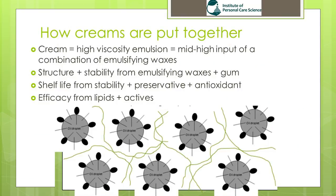To create a cream you need to create a high viscosity emulsion, which we do by using mid to high inputs of a combination of emulsifying waxes. We combine emulsifying waxes to get the best possible stability and shelf life, as well as the best possible structure and a pleasing skin feel. We get our structure and stability from using the emulsifying waxes and adding a gum. The little pin heads around the oil droplets represent your emulsifying waxes, while the green lines separating them are your gum, helping keep oil droplets apart for a good shelf life.